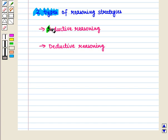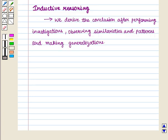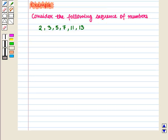One is inductive reasoning and second is deductive reasoning. Now we are going to discuss inductive reasoning. In this type of reasoning we derive the conclusion after performing investigations, observing similarities and patterns and making generalizations. Let us consider an example.